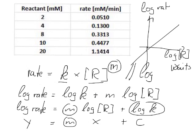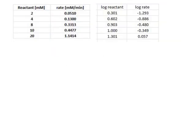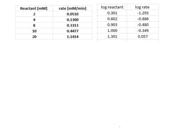So how do we do that in practical terms? Well what we do is we simply calculate the log of the reactant and the log of the rate. So here for example log of the reactant gives us 0.31 and log of 0.05 gives us negative 1.293. Don't worry about the negative, this is perfectly all right if these numbers are small. It's perfectly legitimate to use negative numbers.